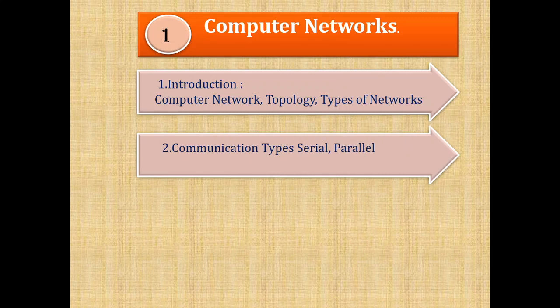The second topic we are going to study is Communication Types. There are basically two types of communications: Serial and Parallel Communication. Serial means something that comes one after another — sequential input or output. Parallel means all at once. So how the communication is going to take place — whether it is Serial or Parallel — and what are the pros and cons of each, we are going to study in this topic.